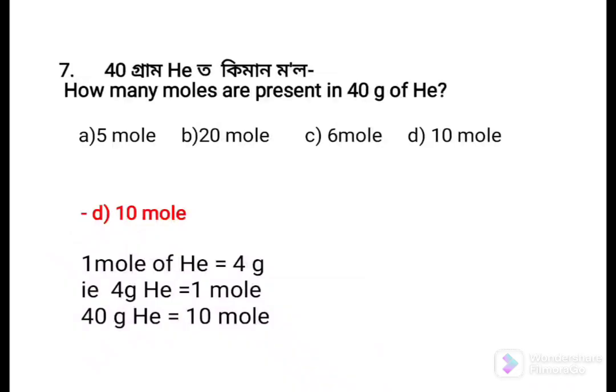Next question: How many moles are present in 40 gram of helium? Option a: 5 mol, Option b: 20 mol, Option c: 6 mol, Option d: 10 mol. The answer is 10 mol, because 1 mol of helium = 4 gram. So 4 gram helium = 1 mol, therefore 40 gram helium = 10 mol.